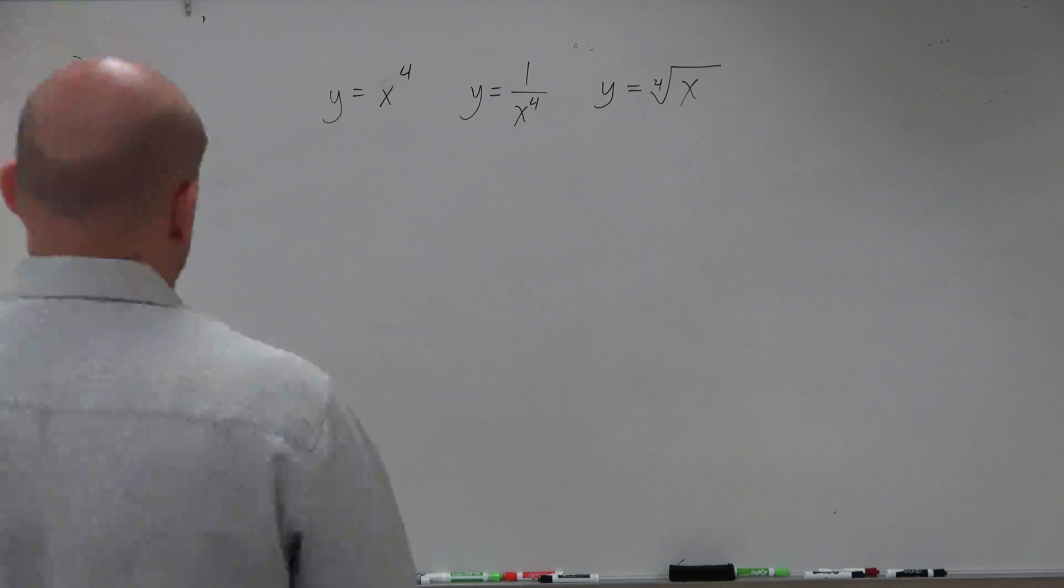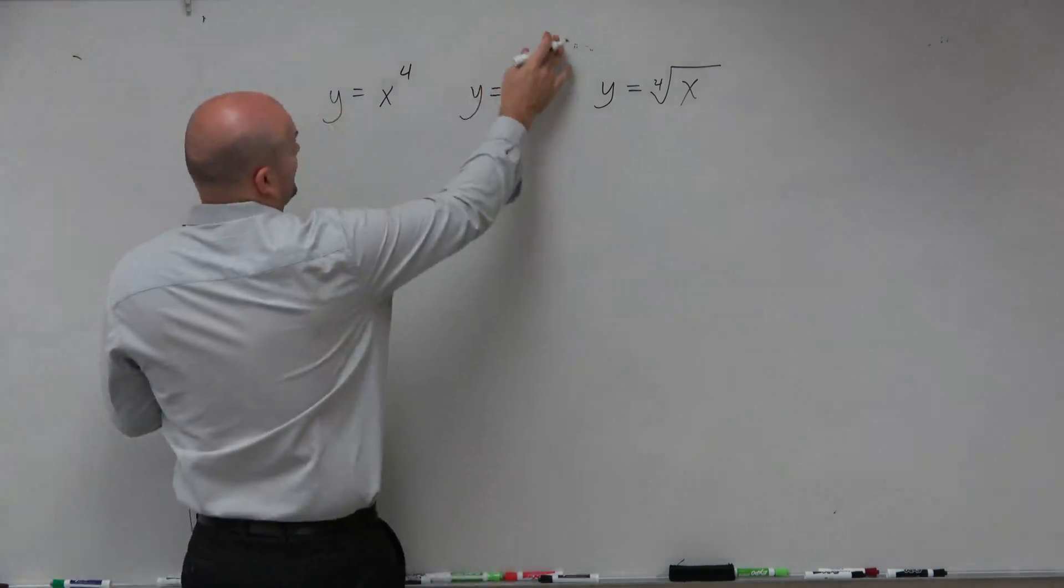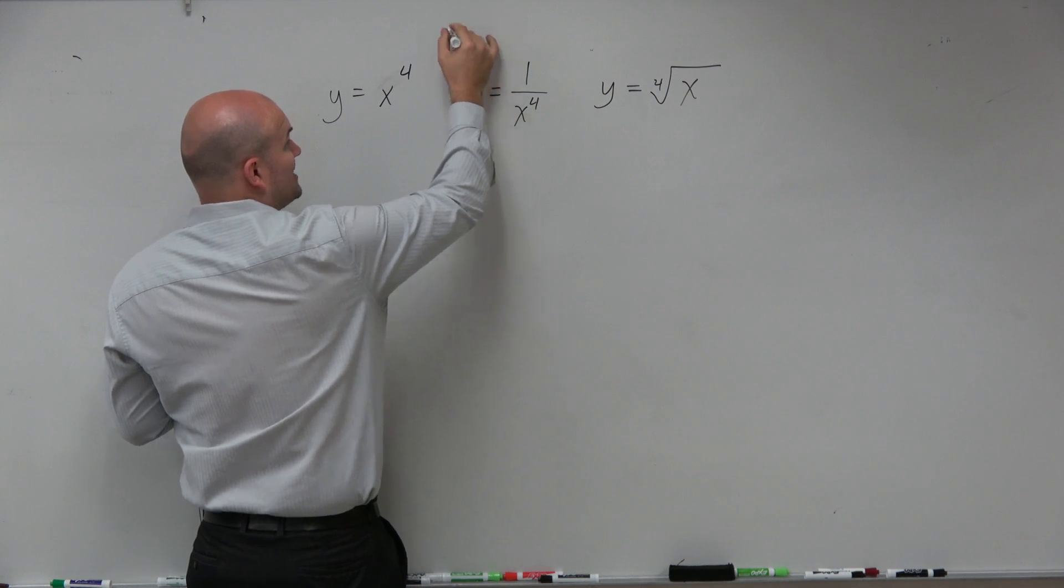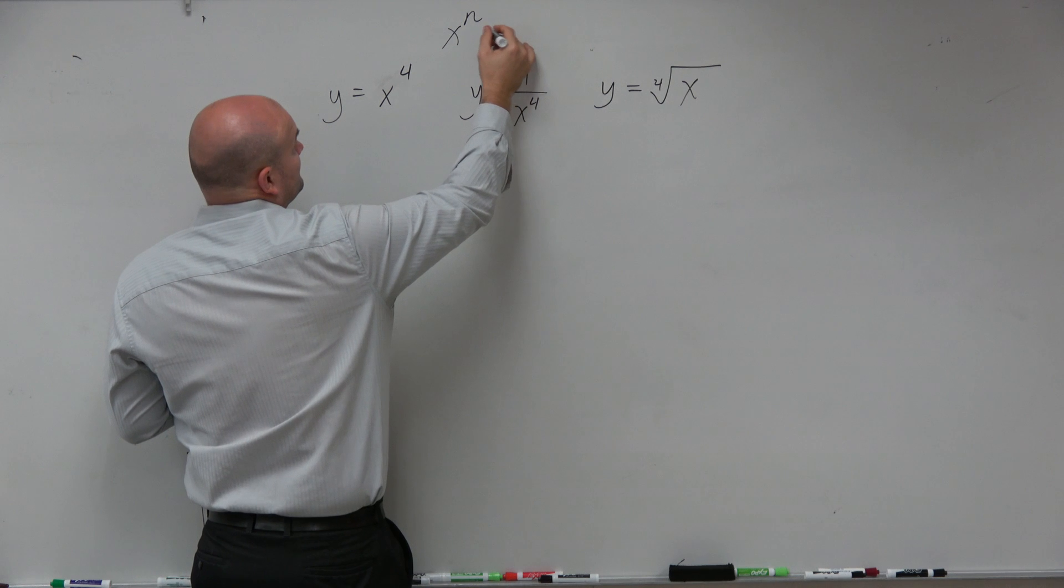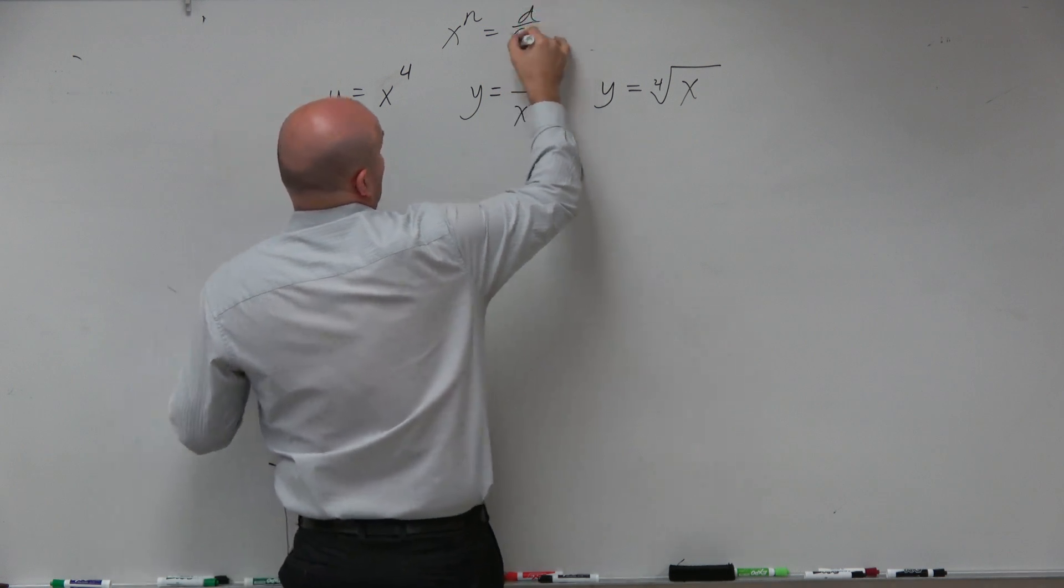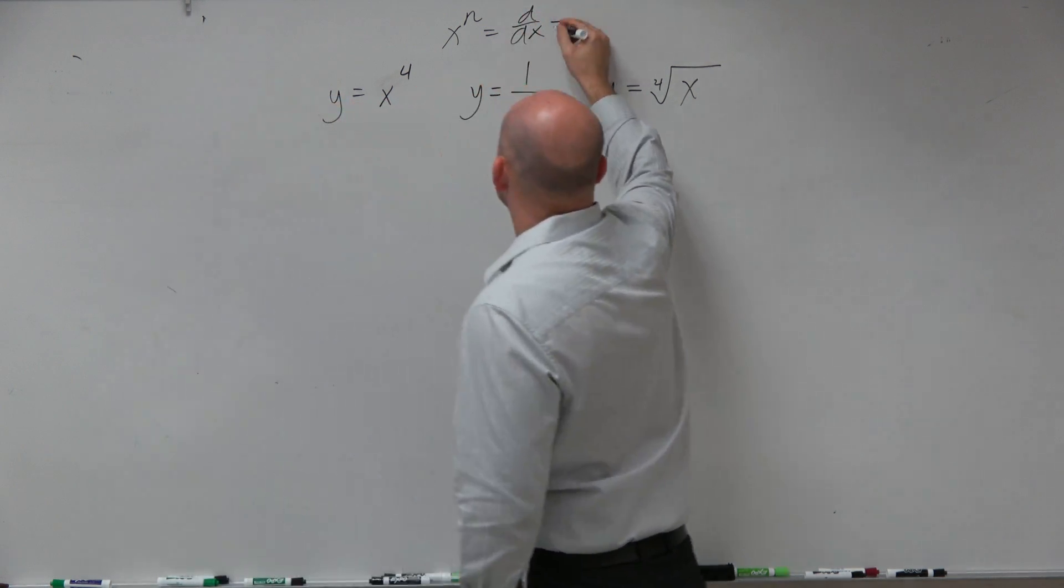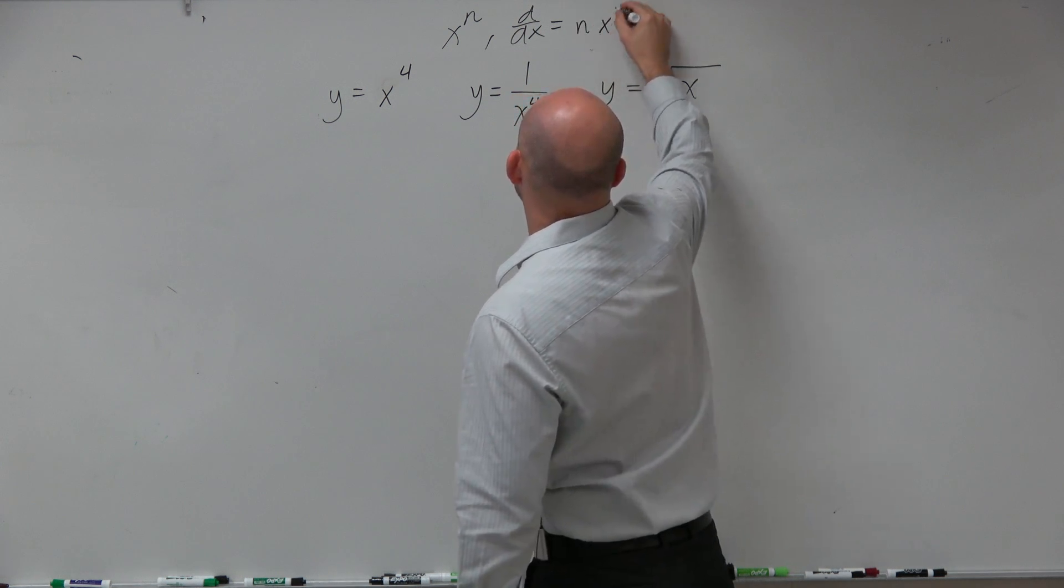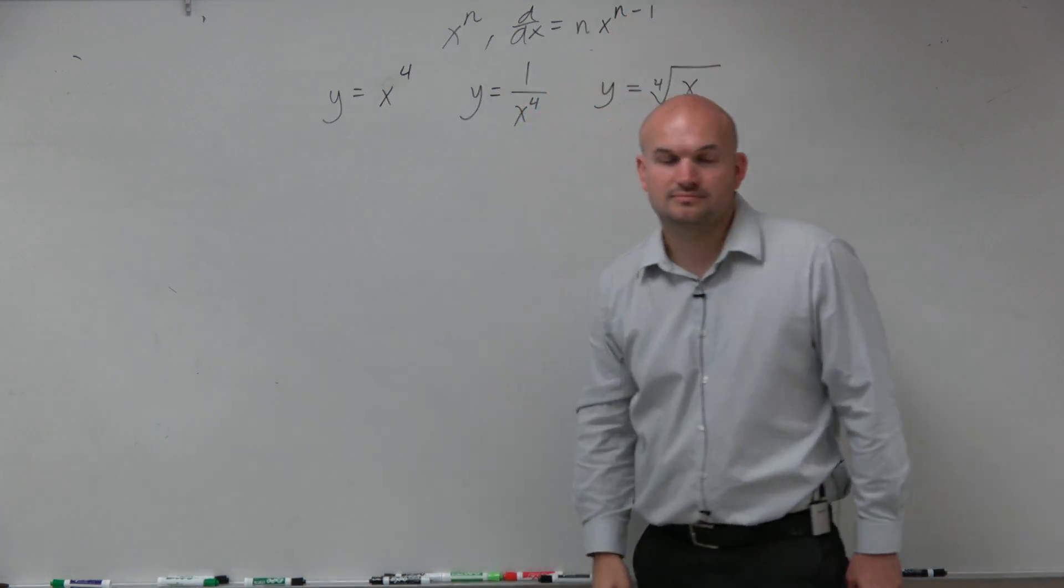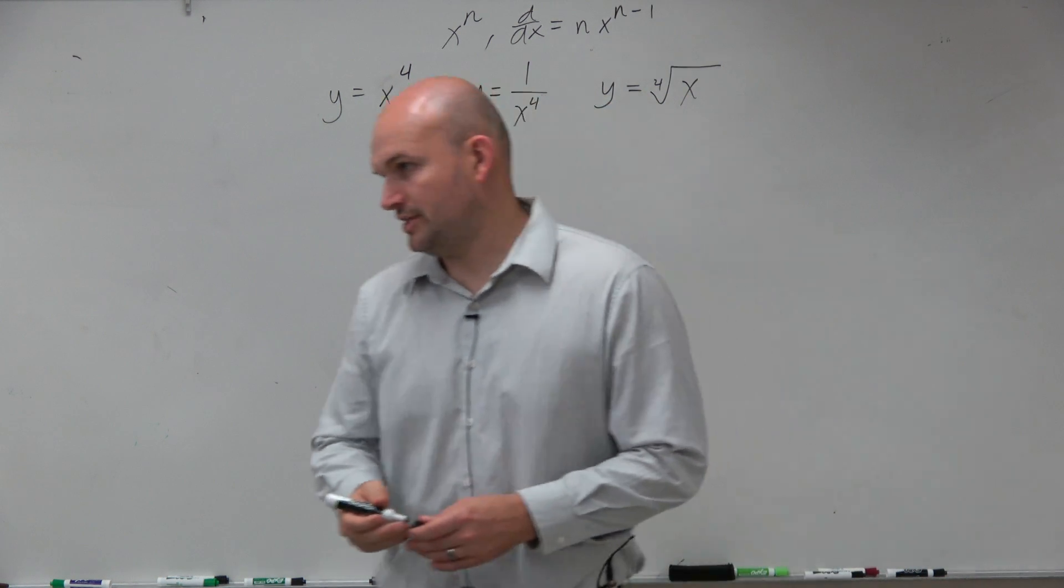So for our three equations, the main important thing that we're going to follow is what we call the power rule. And the power rule basically states, if you have x to the n, then d over dx is going to be n times x to the n minus 1. That is basically what we're calling the power rule.